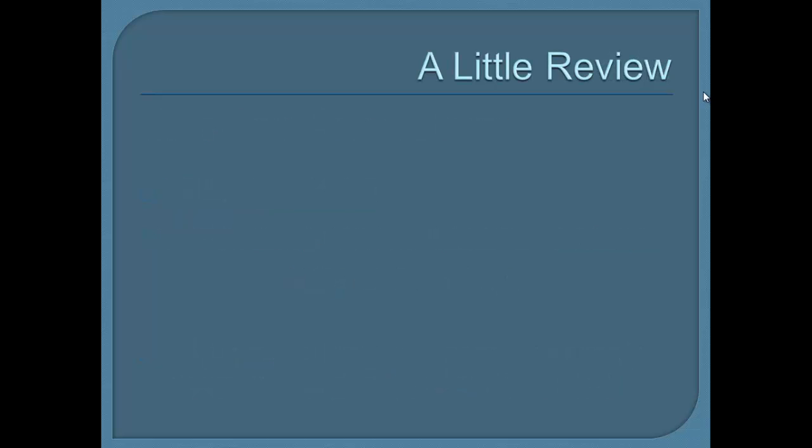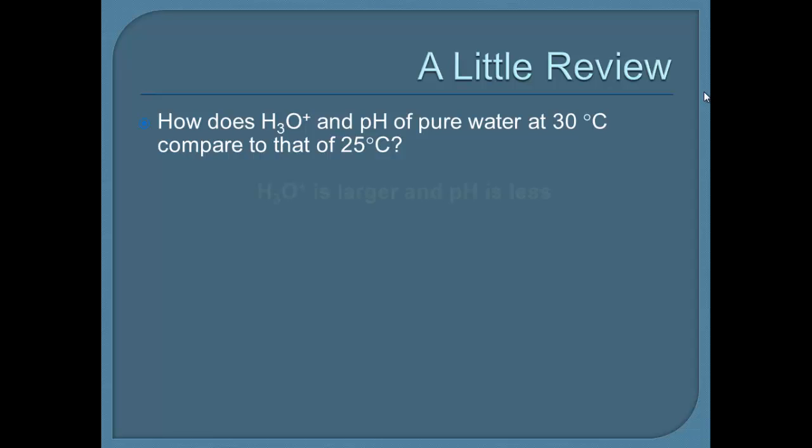So, a little review about what we're just talking about there. The question here is, how does H3O+ and pH of pure water at 30 degrees Celsius compare to that of 25 degrees Celsius? Well, the answer is this: H3O+ is larger, and pH is less. You may be asking yourself why.